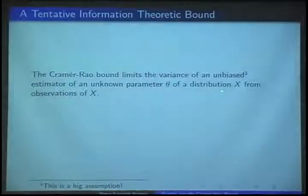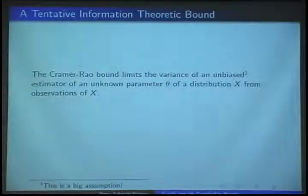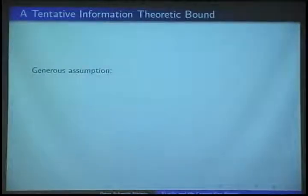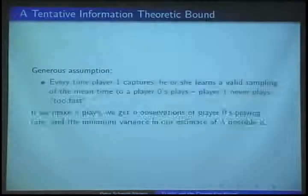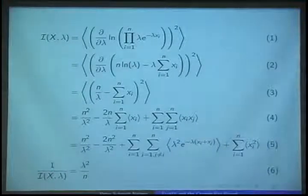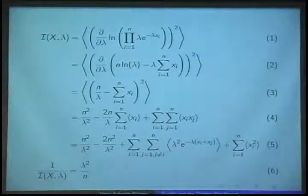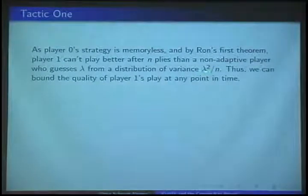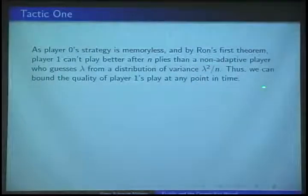The Cramér-Rao bound limits how well you can estimate a parameter theta from a distribution X given observations of X. I applied that here and computed the Fisher information of a bunch of samples from playing Flip It. The result is that after n samples — after n turns — you can't know lambda with variance better than lambda squared, the true lambda, over n.